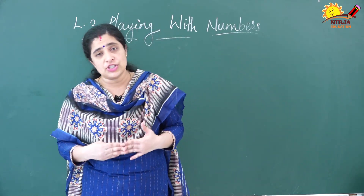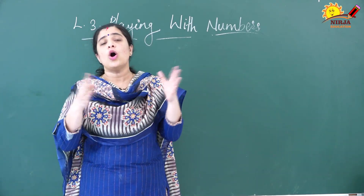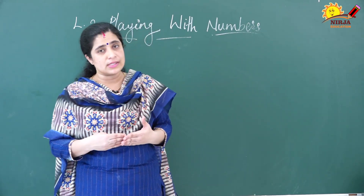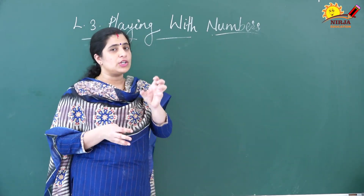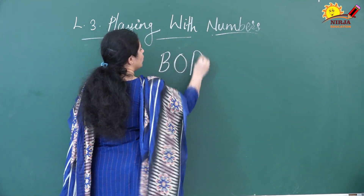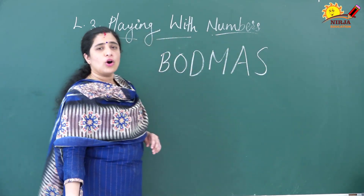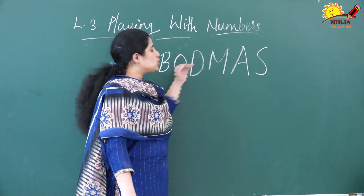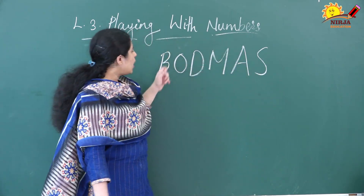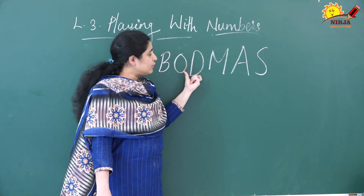First we are going to discuss the rule for addition, subtraction, multiplication, and division. Suppose in a question all four operations appear together — how do you solve it? There is a short form for this, which I am going to write here. That is BODMAS. This is the short form used to solve problems in which all operations come together. The full form is: B for Bracket, O for Of, D for Division, M for Multiplication, A for Addition, and S for Subtraction.